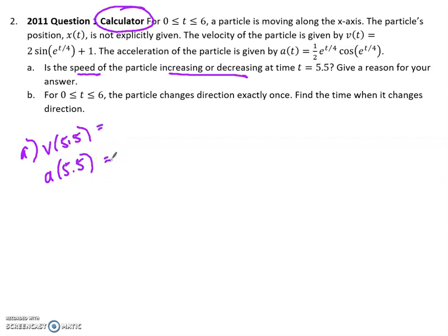To do this in my calculator, I could literally just graph this equation and plug in 5.5, and I get something that is a negative value. When I plug in 5.5 to my acceleration, I end up with also a negative number, negative 1.358. This one was negative 0.453. Because they're both negative, it's speeding up or it's increasing. Your justification could be finding those values.